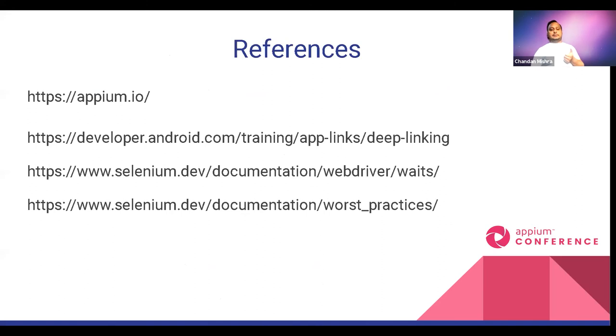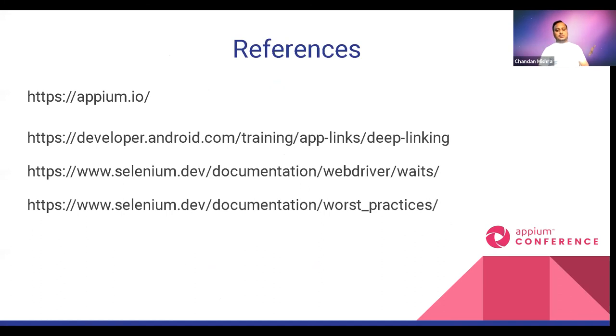These are the references. There is a link for how to create app links, a link for different wait types, and a link for worst practices — because before implementing good practices, you should know what the worst practices are.